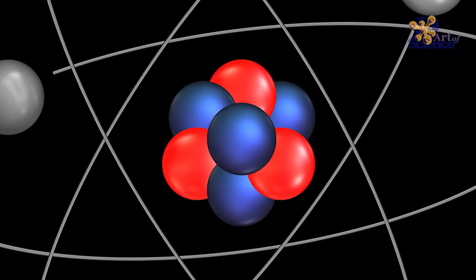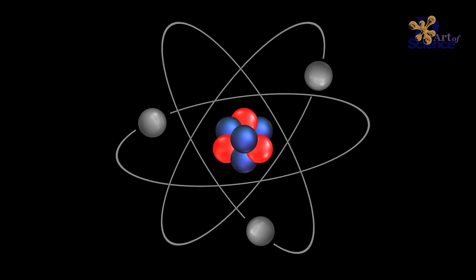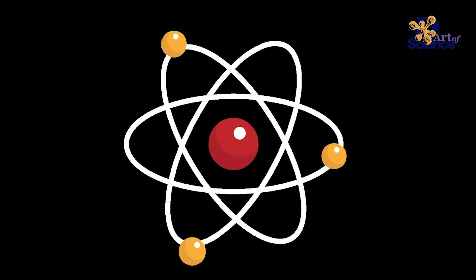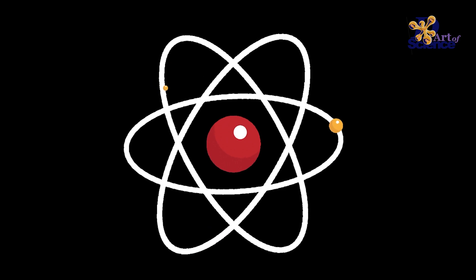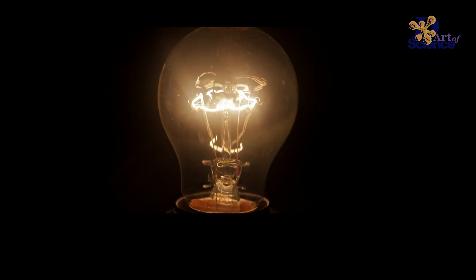And some electrons can even flow out of the atom. This free movement of electrons is what causes electricity. Some materials allow electricity to flow easily and these are called conductors, whereas some materials do not allow electricity to flow through them easily and are called insulators.